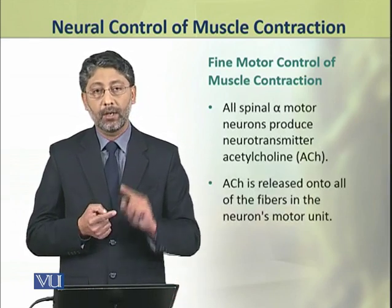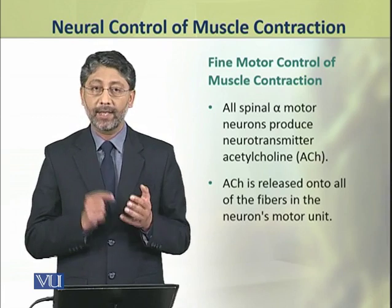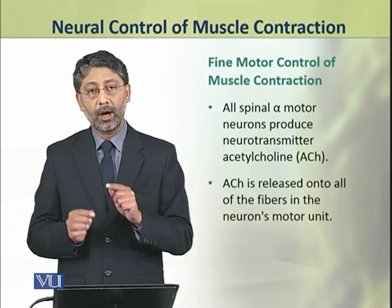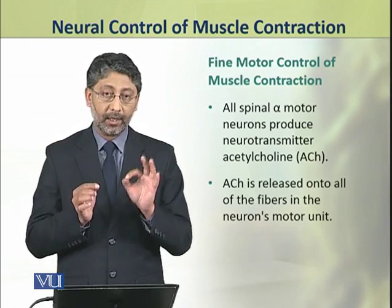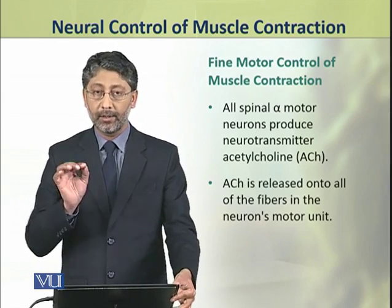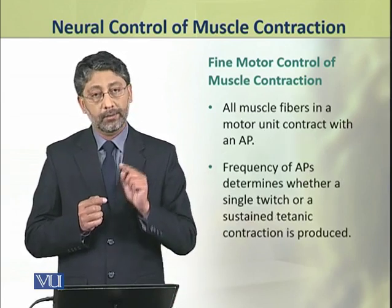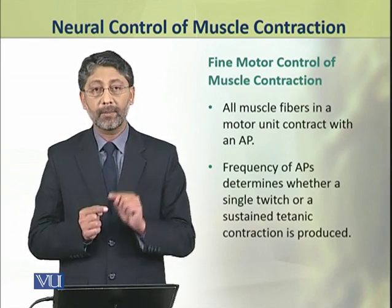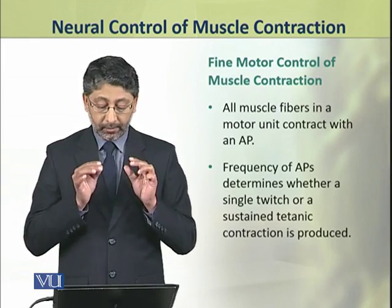All spinal alpha motor neurons produce the neurotransmitter acetylcholine. This acetylcholine is released onto all of the terminal fibers in a single motor unit — all fibers of a motor unit release acetylcholine at the same time. As a result, all muscle fibers present in a motor unit contract simultaneously in response to a single action potential.